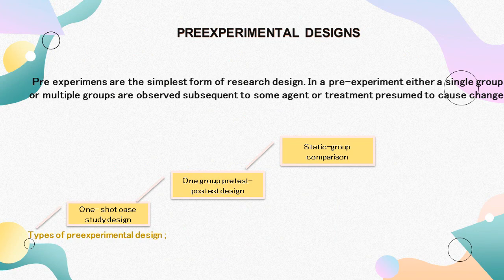Pre-experimental designs are the simplest form of research design. In a pre-experiment, either a single group or multiple groups are observed subsequent to some treatment presumed to cause change. We do not recommend this design; however, we realize they are still sometimes used in educational research. We include these weak designs simply because they illustrate quite well how extraneous variables may jeopardize the internal validity of a design.